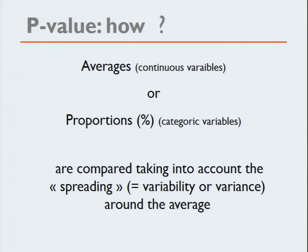How this is calculated does not matter whether you use a t-test, the chi-square test, or the Fisher exact test — it is always the same. It's about comparing averages or proportions while taking into account the spreading, the variability, or variance around the average.